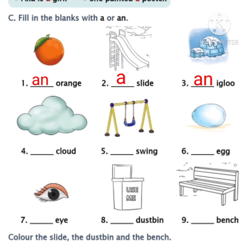Have you finished, children? Now the fourth one: cloud. The word cloud starts with C. Is C a vowel or consonant? Yes, it's a consonant, so we must write A in the fourth blank. Have you done? Now the fifth one: swing. The word swing starts with S. S is a consonant, so we must write A in the fifth blank. Have you done, children? Now the sixth one: egg. The word egg starts with E. E is a vowel, so we must write AN before egg in the sixth blank.